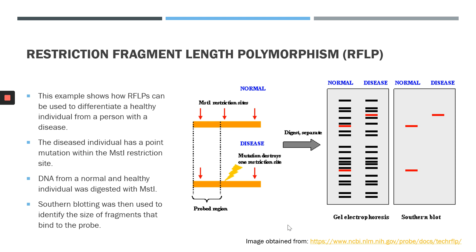Once the fragments have been resolved on the agarose gel, a probe is designed to bind to the sequence in all cases. In the normal individual, the probe will bind to both sequences that have been digested with MST1, so you'll see two fragments for the healthy individual whose DNA has been cleaved. The diseased individual, however, will display only one fragment of DNA on the gel, and this fragment would resolve at a higher length. In this way, RFLP analysis can be used to differentiate between individuals who have diseases when a point mutation is present at a restriction site.